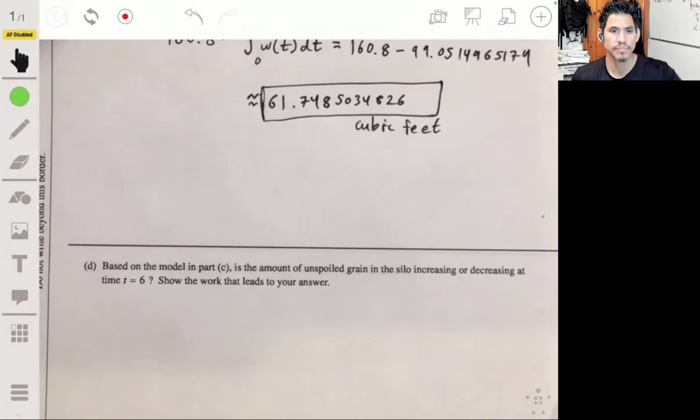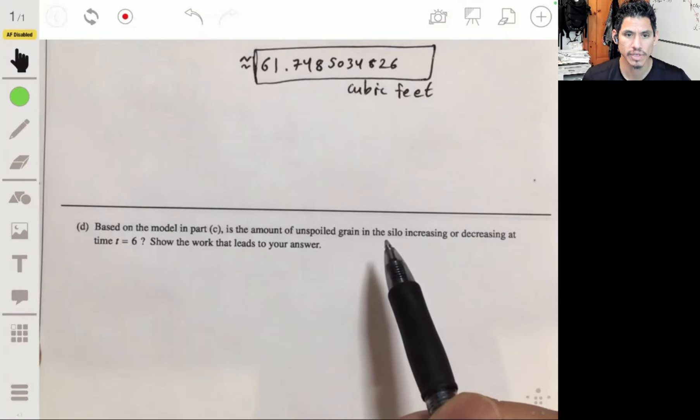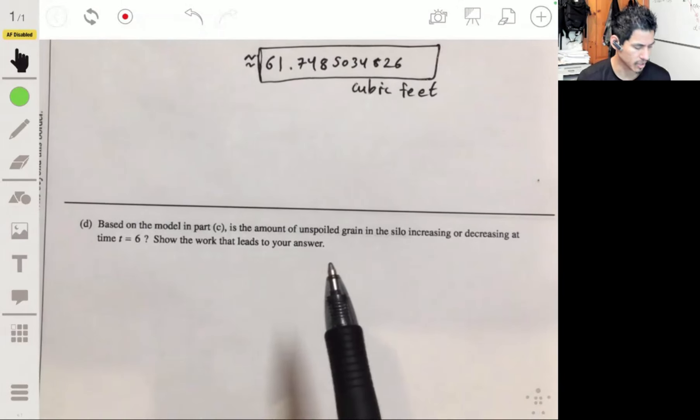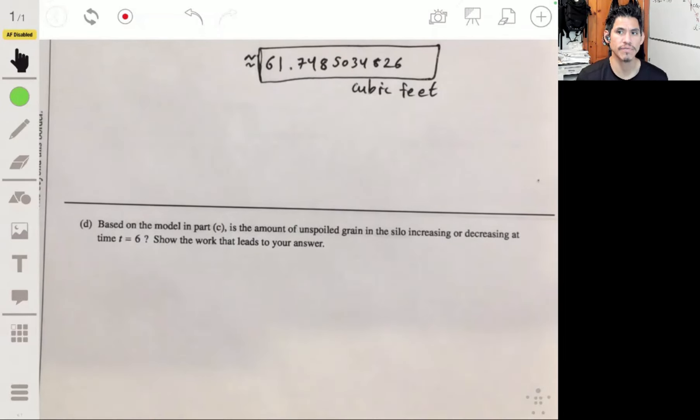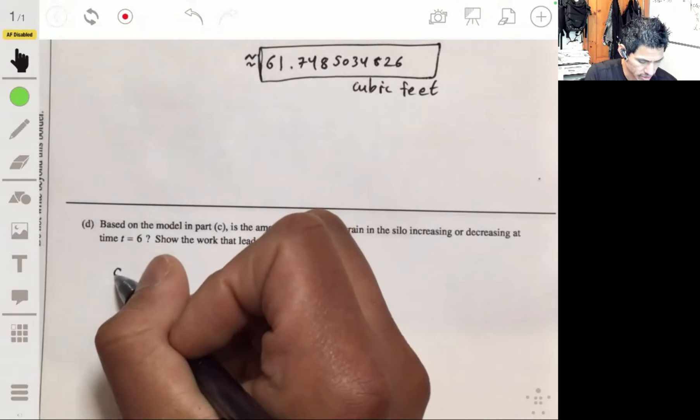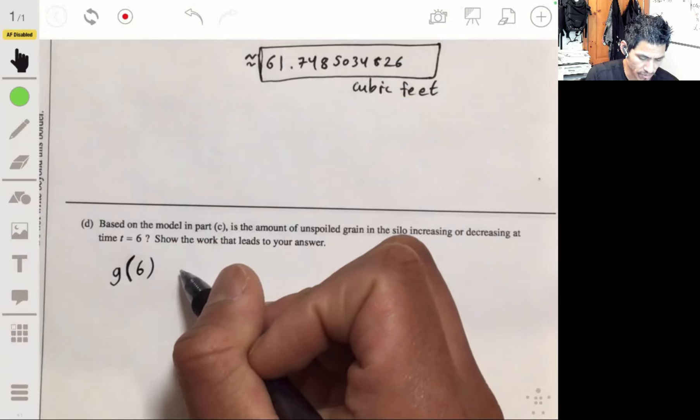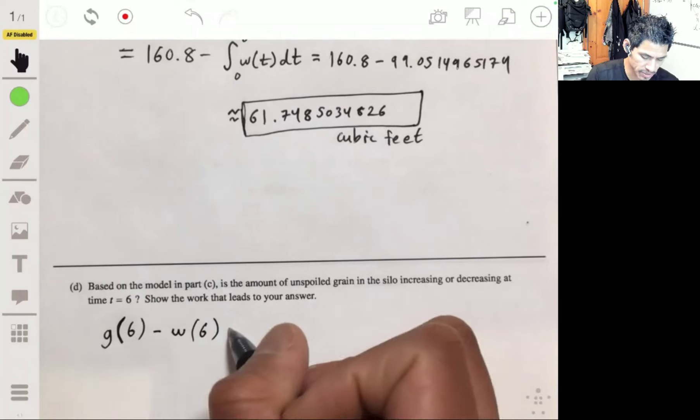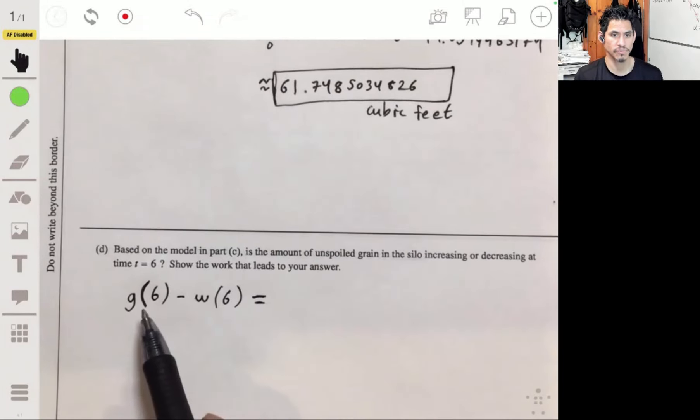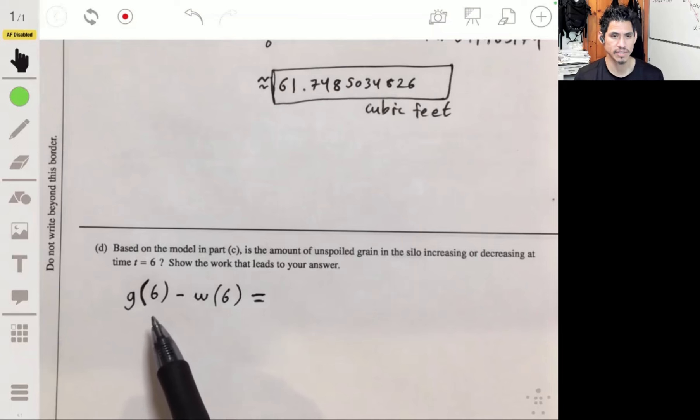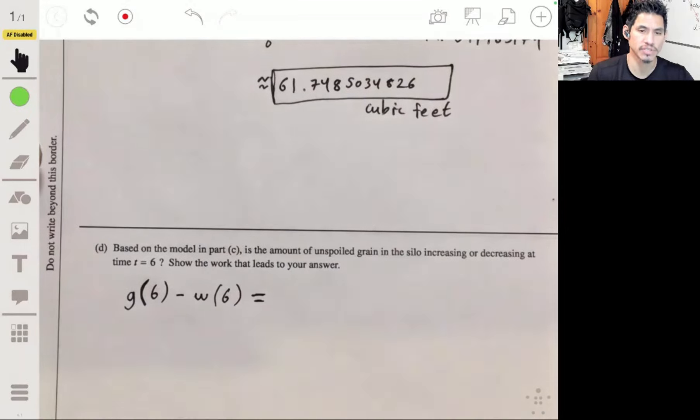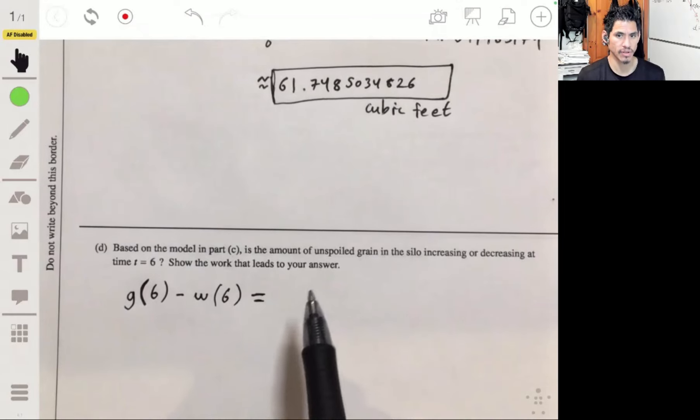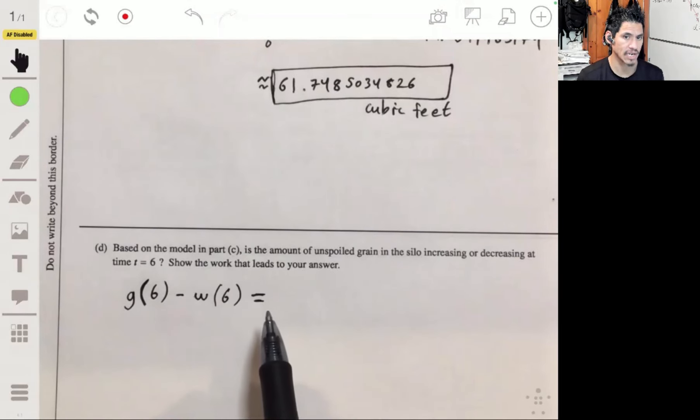All right, now in part D, based on the model in part C, is the amount of unspoiled grain in the silo increasing or decreasing at time equal six? Okay, so to understand if it's increasing or decreasing, we want to see if when we have G of six, we want to subtract W of six, we want to see what this value is because both of these give you the rates. G of six gives you the rate at T equals six that it's being added, and W of six gives you the rate that it's being spoiled at T equals six. So if this ends up being positive, then that means the amount of unspoiled grain is increasing. If this is negative, then it's going to be decreasing.